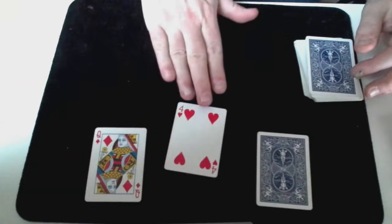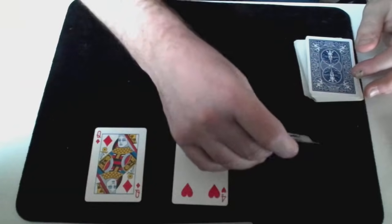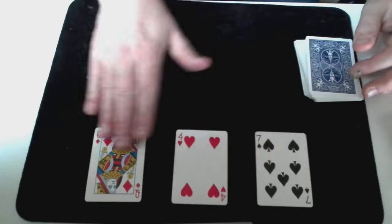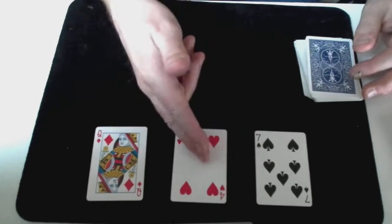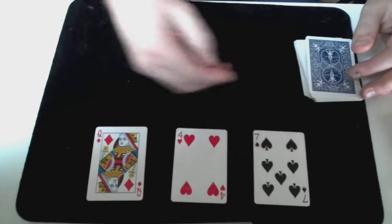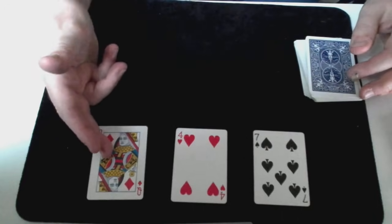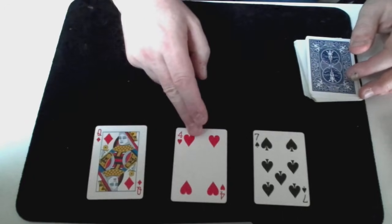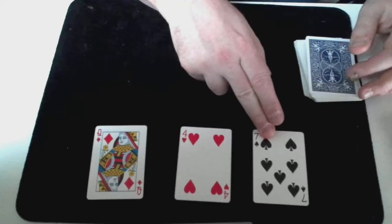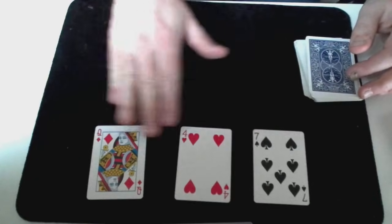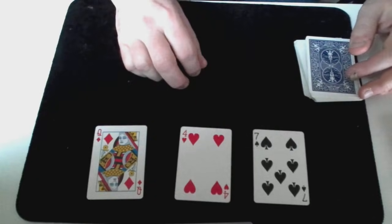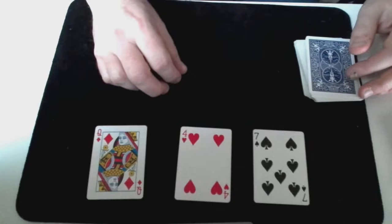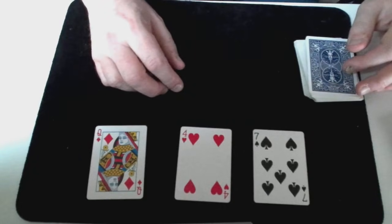But as you're revealing these cards silently add up the values in your head. So in this case we had a queen, a 4 and a 7. So a queen equals 12 plus 4 equals 16 plus 7 equals 23. Now whatever that value is we need to take it from 39. So in this case 39 minus 23 is 16.